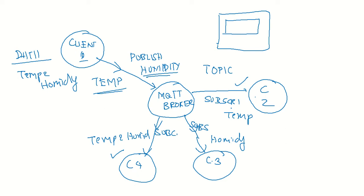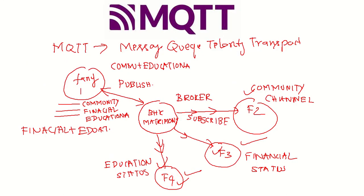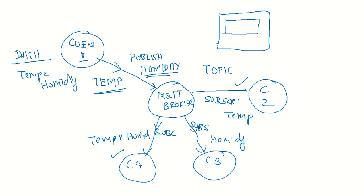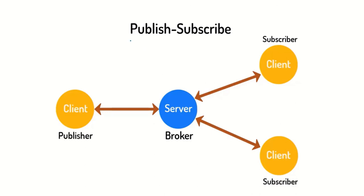The topic for temperature and the topic for humidity are managed by the broker, which acts as a software entity. If you subscribe to a particular topic, you will receive the relevant information. This is the explanation for the MQTT broker — the matrimony broker maps to the MQTT broker, and the families map to the clients.